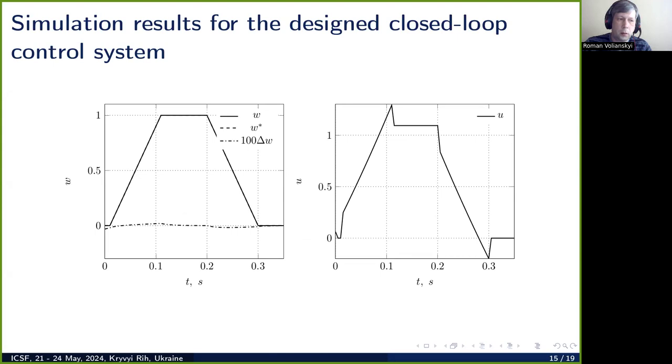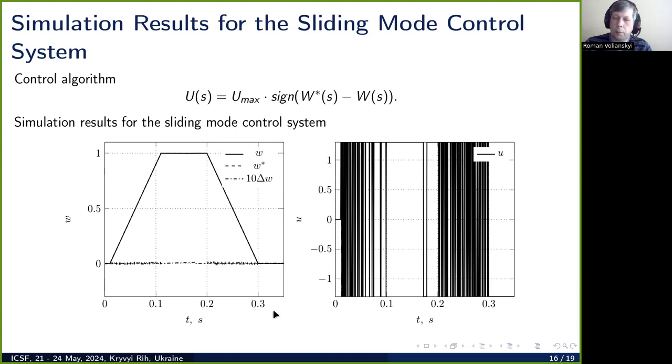Here, in slide 15, you can see the simulation result for the desired control system. It is clear that the designed control system is quite precise. We can see that the control error here is much less than one percent. Thus, we can claim that the motion trajectory is formed with high accuracy. This trajectory is formed by applying the following voltage for the considered electric drive.